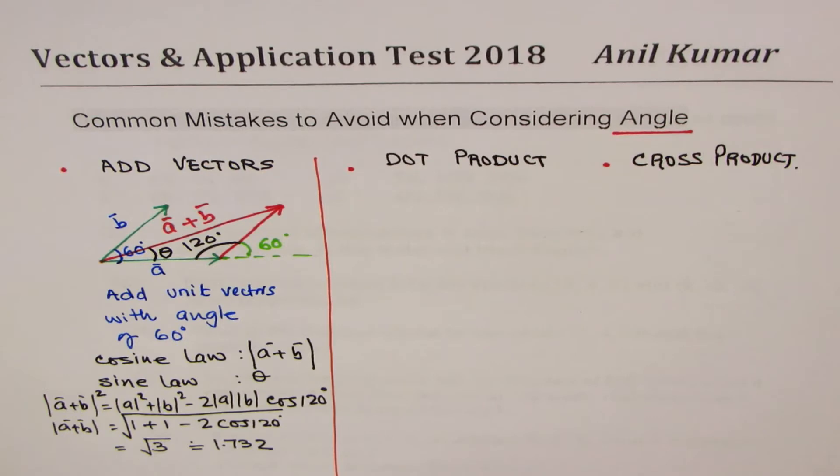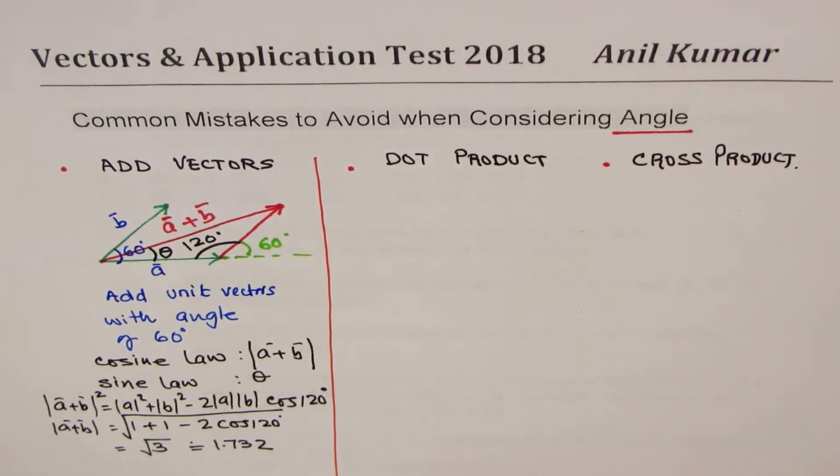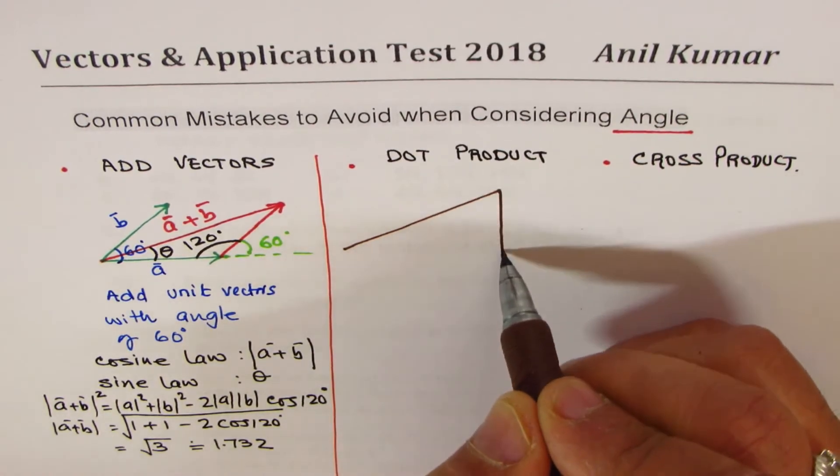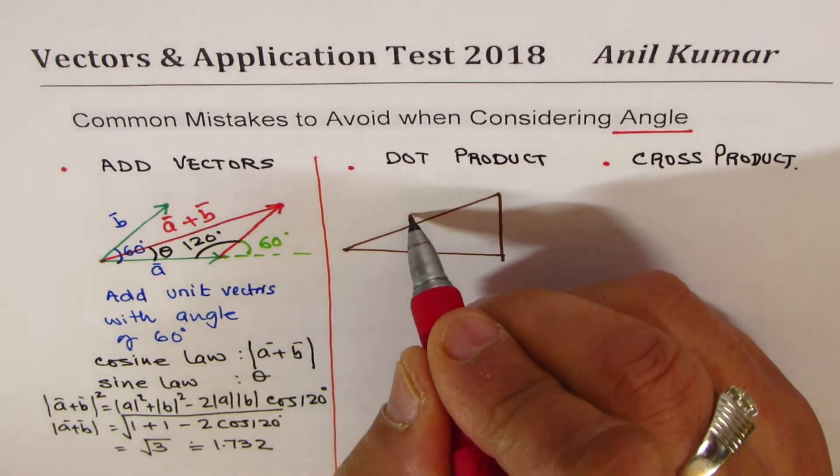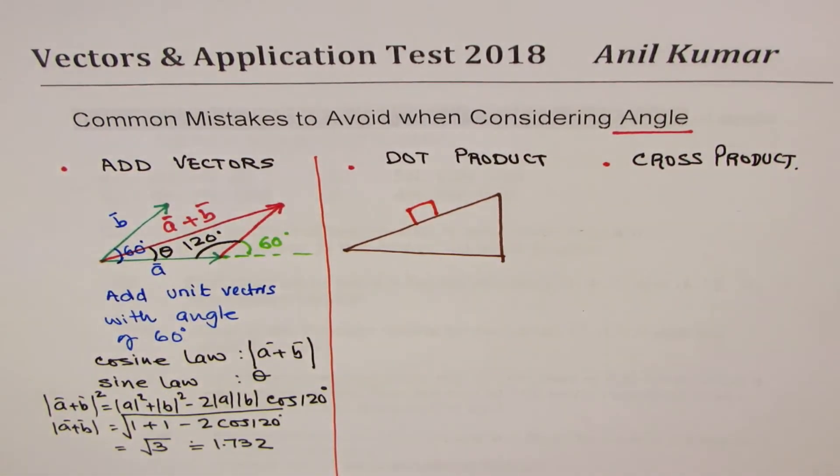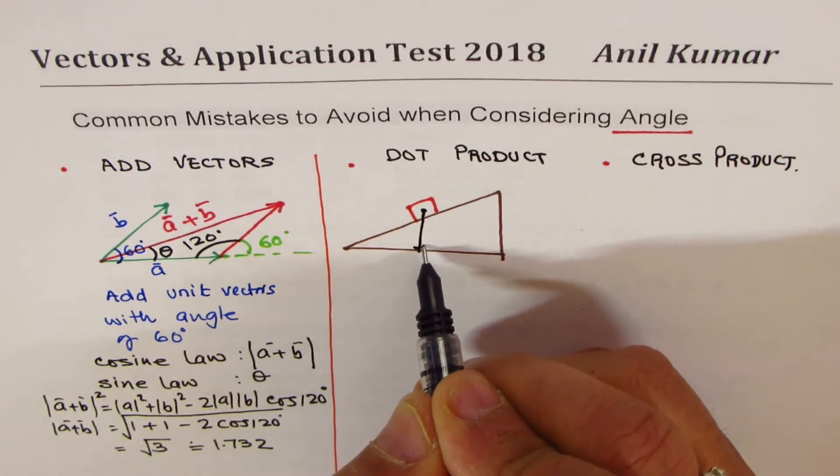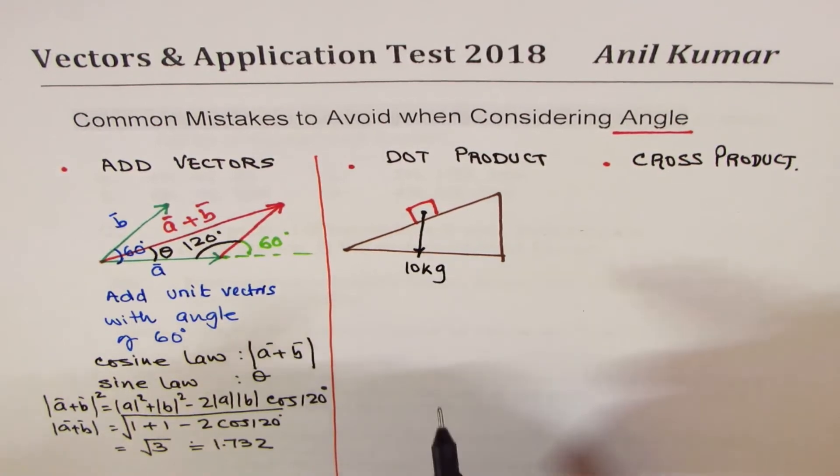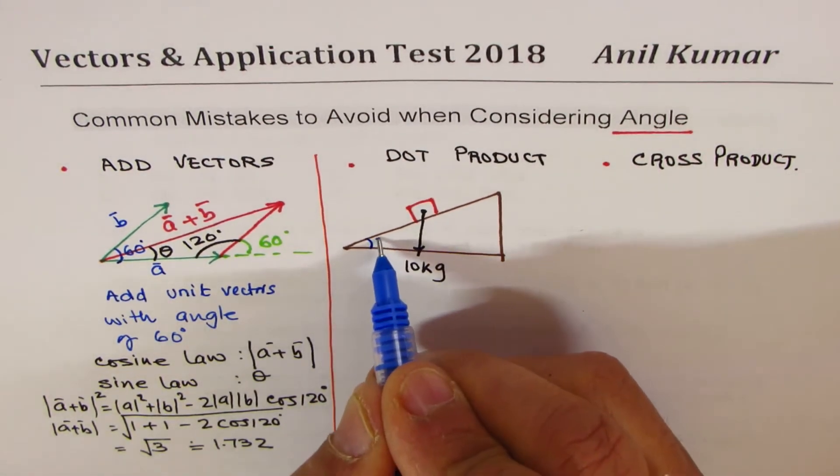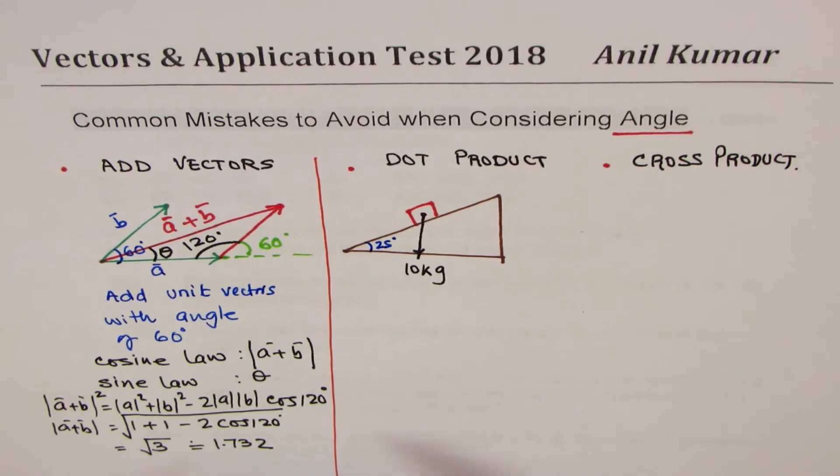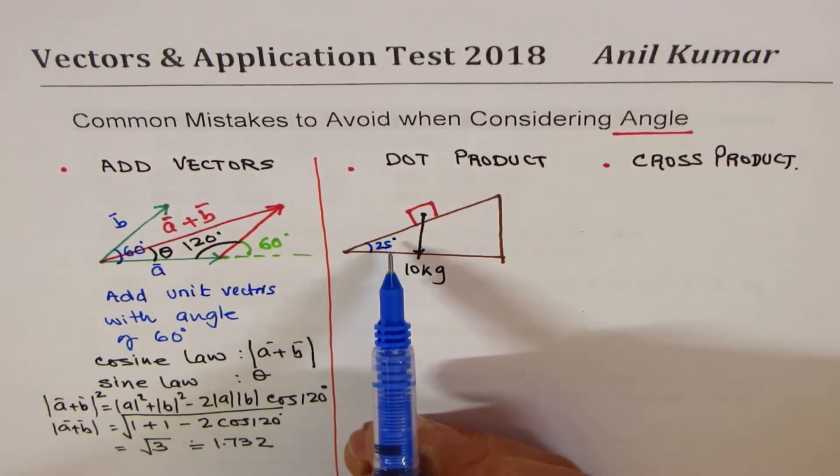Now let's take up another case, and this time for the dot product. Now in dot product, one of the common mistakes is, let me take up an application. So what I will do here is take a ramp. So work done is an application of a dot product. So let us assume that there is a body here whose mass is 10 kg. And let us say that this angle here is 25 degrees. This angle here is 25 degrees.